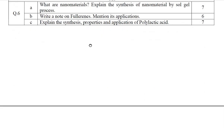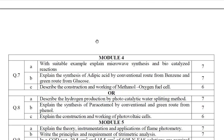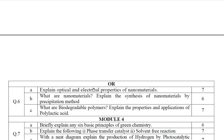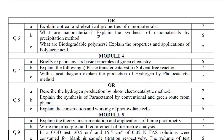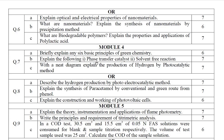Moving on to Module 4 — as you know, Module 4 is Green Chemistry and Alternative Energy Resources. Question numbers 7 and 8 cover this module, from both Set 1 and Set 2. Go through Questions 7 and 8 for Module 4.